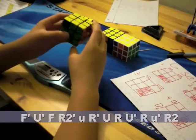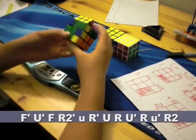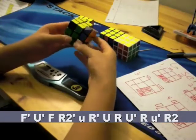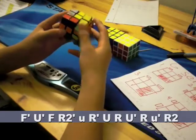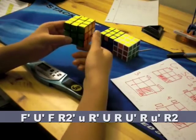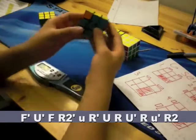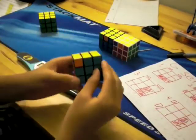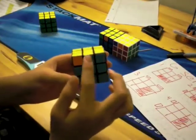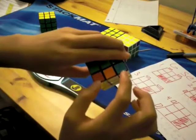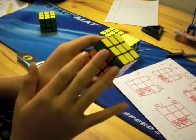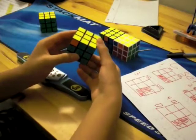For the next one, we have the 1x1x2 block in the same place. Instead of the headlights being in the back, they're going to be on the left. And the algorithm for that is...